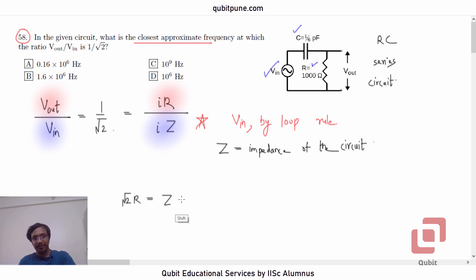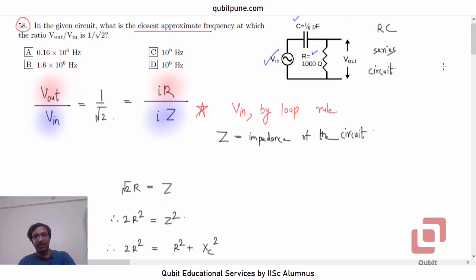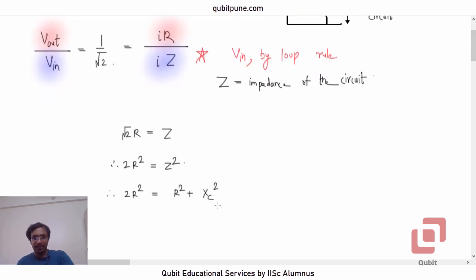But what is Z in this case? Let us first square. So, 2R squared will be Z squared. Therefore, 2R squared will be equal to R squared plus XC squared. There is no inductive reactance here, only capacitive reactance XC. So, there will not be XC minus XL squared, just XC squared. R squared, we can shift it here. So, R squared is equal to XC squared. Both are positive quantities. So, R will be equal to XC.